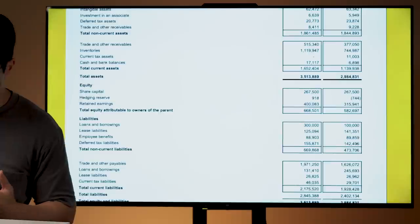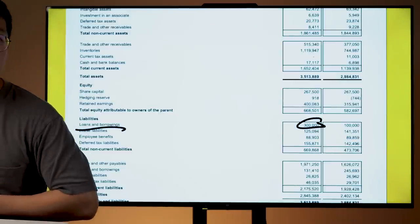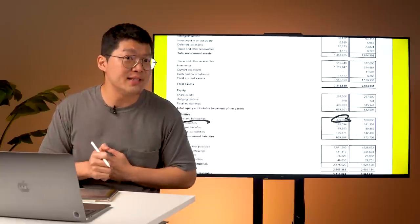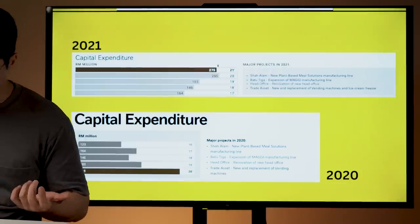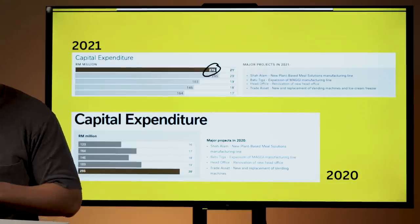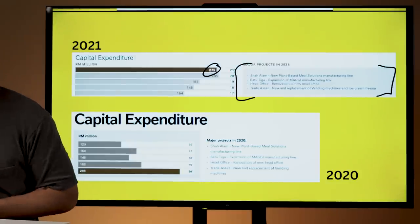So in order to gear up their business, what they have done is that for FY 2021, they have a loan and borrowing standing of around RM300 million. How do they use this money? In FY 2021, they have used roughly RM275 million for these four major projects that is stated in their annual report.